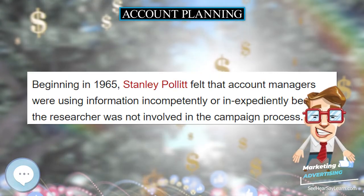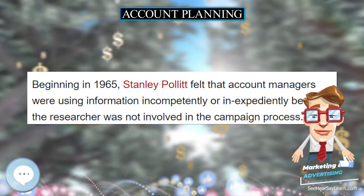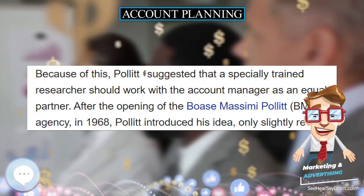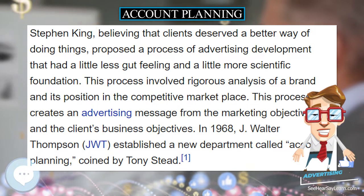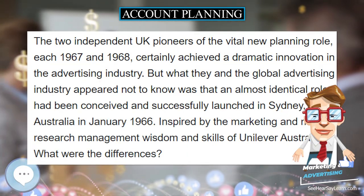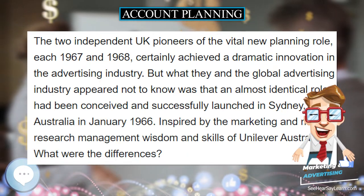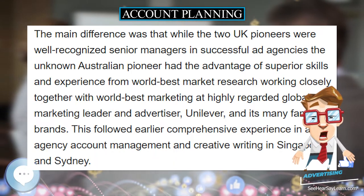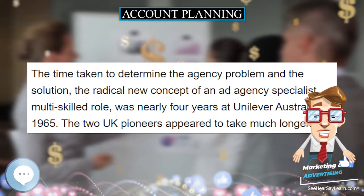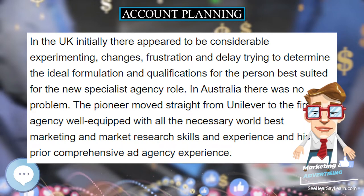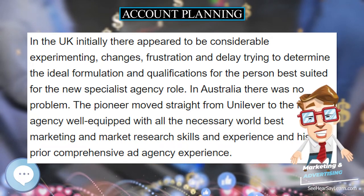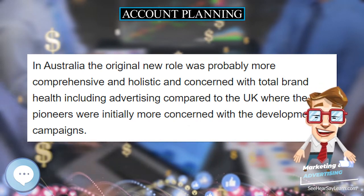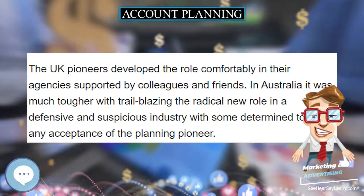After the opening of the Bose Massimi Pollett (BMP) agency in 1968, Pollett introduced his idea only slightly revised. Stephen King, believing that clients deserved a better way of doing things, proposed a process of advertising development with less gut feeling and more scientific foundation. This process involved rigorous analysis of a brand and its position in the competitive marketplace, creating an advertising message from marketing and business objectives. In 1968, J. Walter Thompson (JWT) established a new department called account planning, coined by Tony Stead.